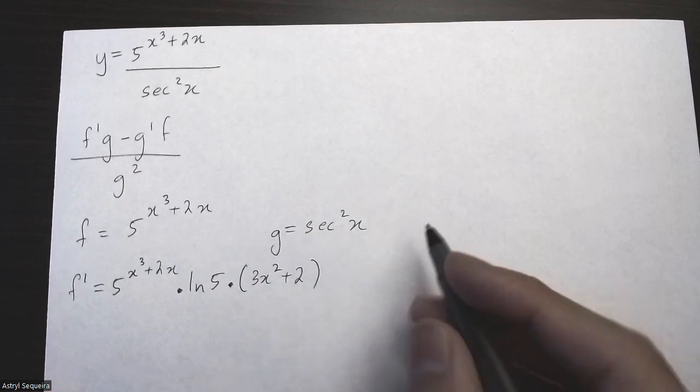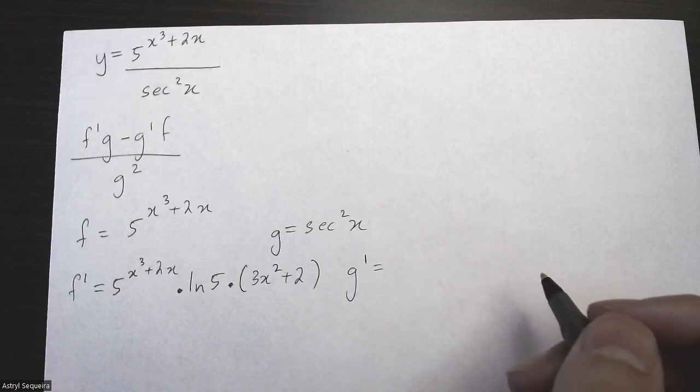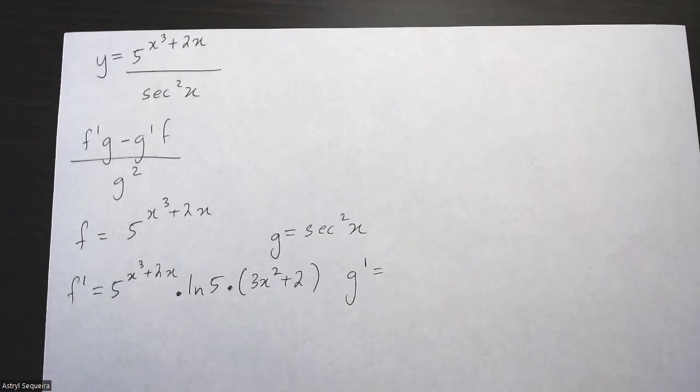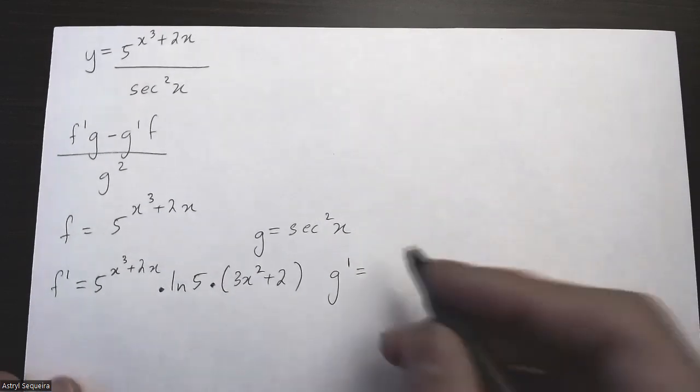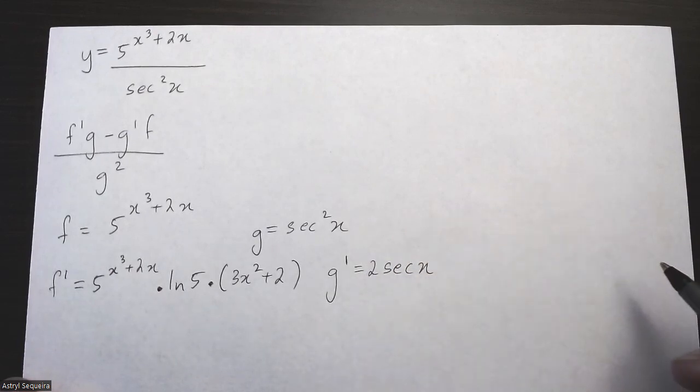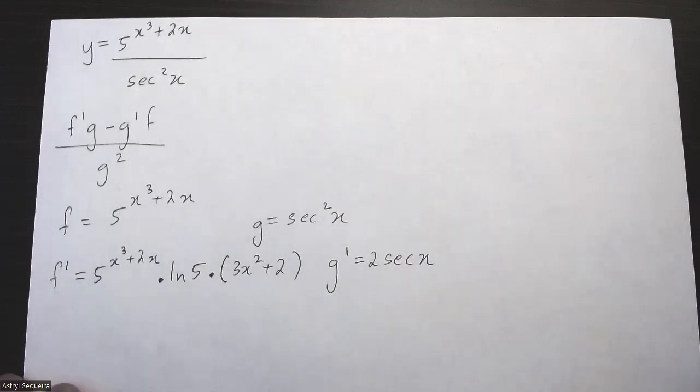The derivation of sec squared x: we bring our exponent down, which gives us 2 sec x. The new exponent is 1, so I don't need to write that.